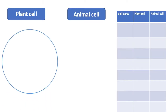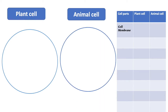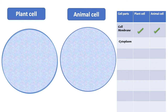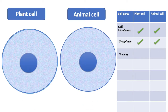Let's compare them. This is the cell membrane. It is the covering of the cell — it's like the skin of the cell. This is the cytoplasm. It is a jelly-like substance inside the cell. It is mostly water, but it also contains some chemicals.